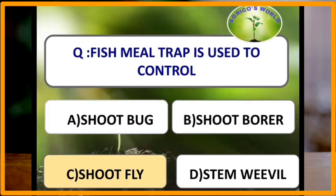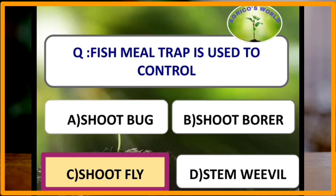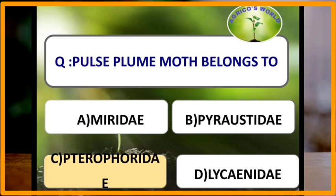Fish meal trap is used to control shoot flies. Pulse plume moth belongs to the order Pterophoridae.